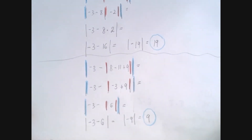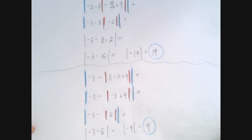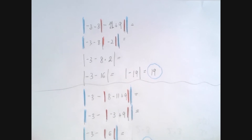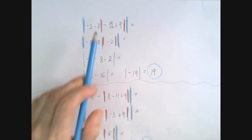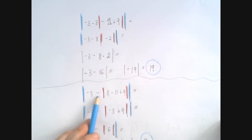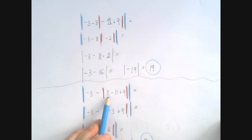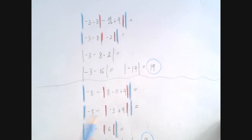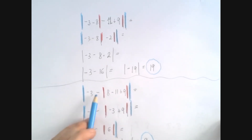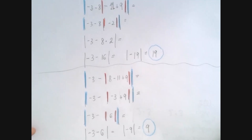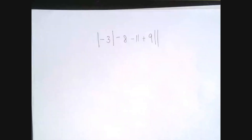Notice how different the operation is just because of that small move of the absolute value sign. Here we have a multiplication; here we have a subtraction where 8 is inside the absolute value sign. So this minus is not about the 8 anymore, like it was in the previous one.